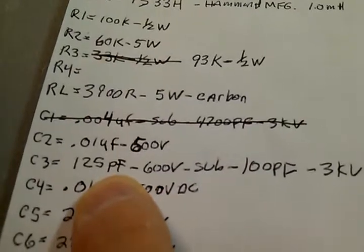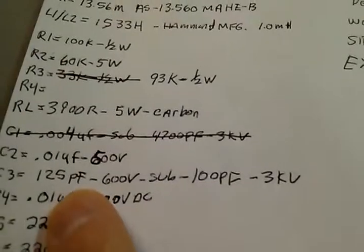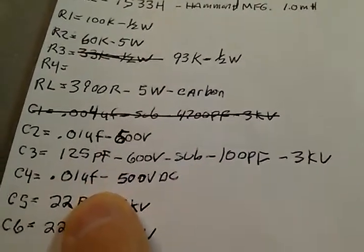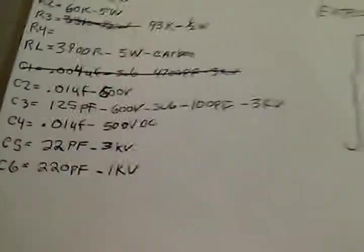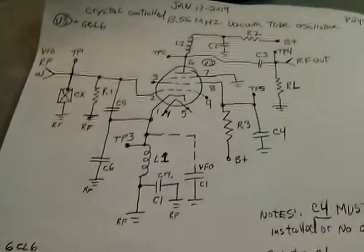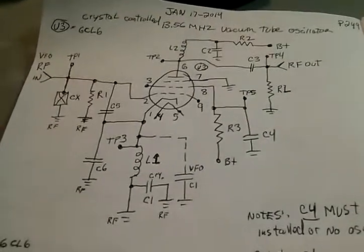C2 and C3, that was the output. We got 100 picofarad—they call for 125. C4 and C5 and C6 right there. So you do that and you should get an oscillator working. So there you have it.